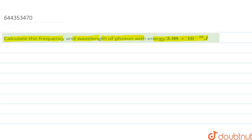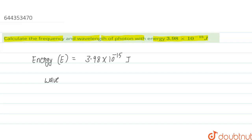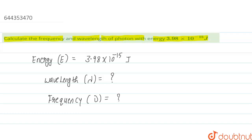The given data: energy E = 3.98 × 10⁻¹⁵ joules. We have to calculate the wavelength, represented by lambda (λ), and the frequency, represented by mu (μ).